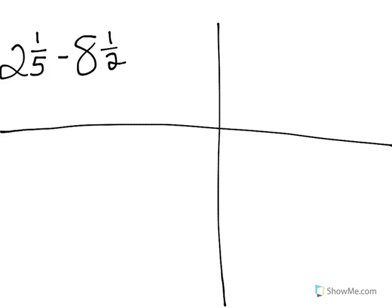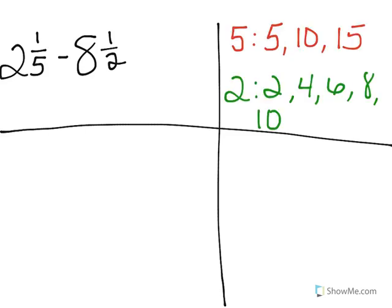The second problem I'm going to take a look at is 2 and 1 fifth minus 8 and 1 half. We have the problem. And now the next step is to go ahead and find the least common denominator. I listed out several multiples of 5 and 2, and I found that the least common multiple is 10. Therefore, our least common denominator is 10.